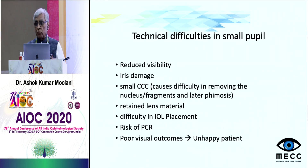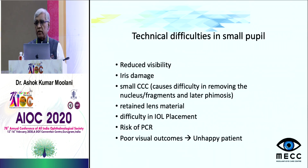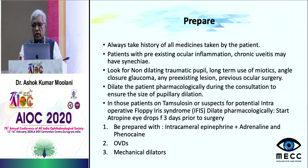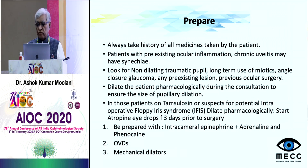There are various difficulties encountered during surgery with small pupils due to poor visualization, such as iris damage, a small CCC which can cause difficulty in removing the nucleus and nuclear fragments. The small CCC can later cause capsular phimosis. There may be difficulty in IOL placement, the risk of PCR increases, and the result is poor visual outcomes and a very unhappy patient.